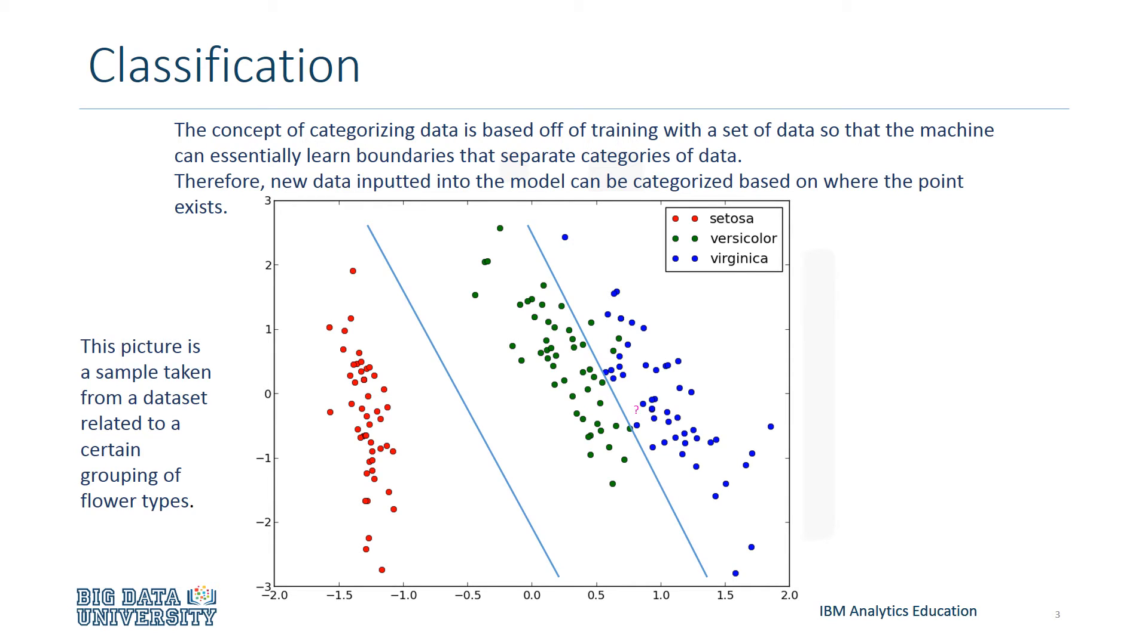So the point of this is, if we had a new out-of-sample data point, let's say right about here, and we wanted to classify this new point, the model can now do the classification for us. In this case, the point would most likely be predicted as a virginica.